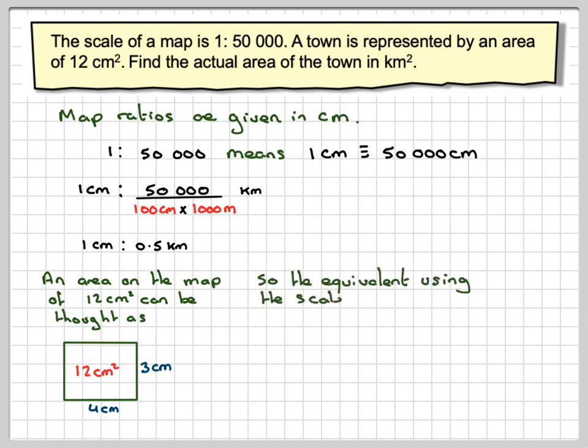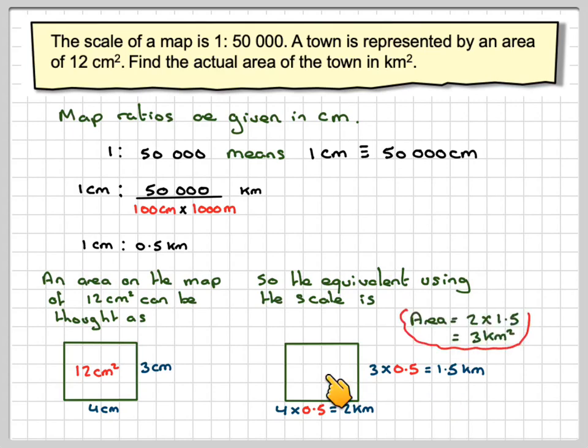The equivalent area using the scale would be 4 centimetres using this scale here will become 4 times 0.5, which is 2 kilometres. And then 3 centimetres will become 3 times 0.5, which is 1.5 kilometres, and then doing 2 kilometres times 1.5 kilometres will give me the area which is represented by 12 centimetres on the map.